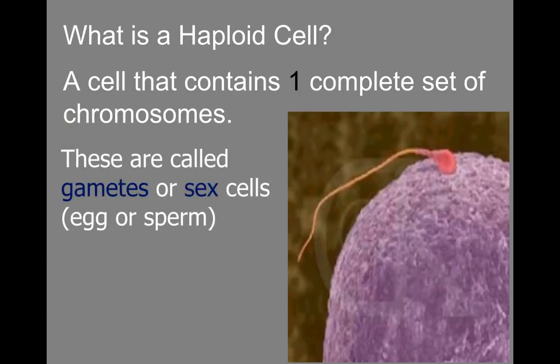A haploid cell alternatively has one complete set of chromosomes, and this is called a gamete — a sex cell, a sperm cell or an egg cell. It's really important that these cells are haploid, and I think haploid sounds like half. They contain half of the genetic information because when you have one half plus one half, you get one whole. So if you have a sperm cell and an egg cell that come together during fertilization — 23 and 23 — that's going to make 46, the first cell that creates a new tiny human.